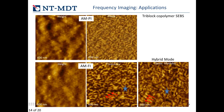Another block polymer example, similar to SBS: with amplitude modulation phase imaging at a particular setpoint, we see mostly sample topography with only hints of microphase separation. However, going to frequency imaging, we see a definite contrast related to different blocks in the frequency map. Hybrid mode imaging on the same sample shows that bright domains in frequency correspond to high elastic modulus domains. This confirms that in this sample, the frequency contrast is more directly related to local modulus of the material.